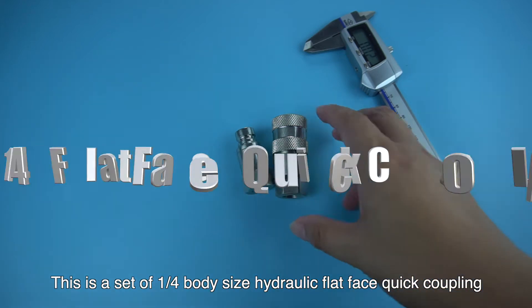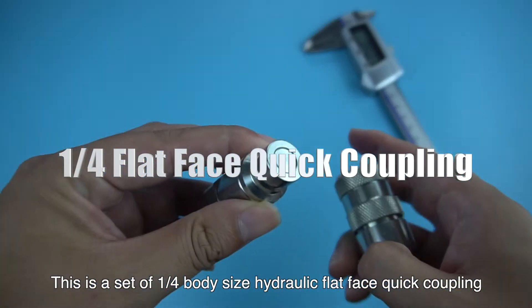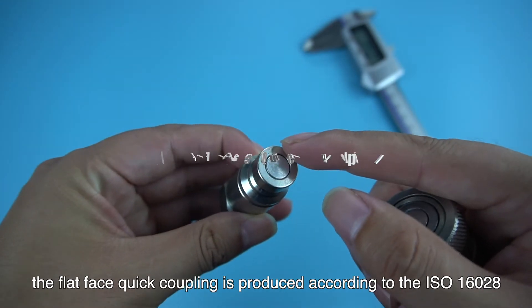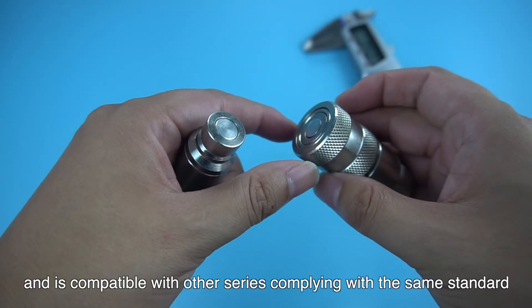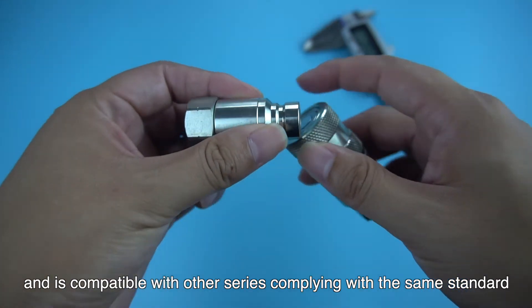This is a set of 1 quarter body size hydraulic flat face quick coupling. The flat face quick coupling is produced according to the ISO 16028 and is compatible with other series complying with the same standard.